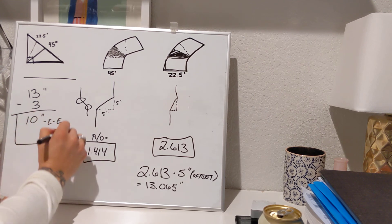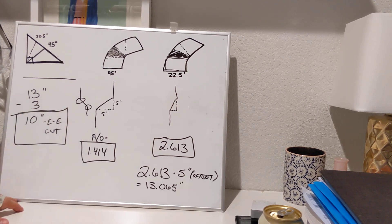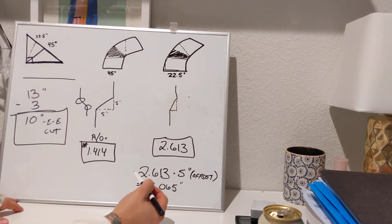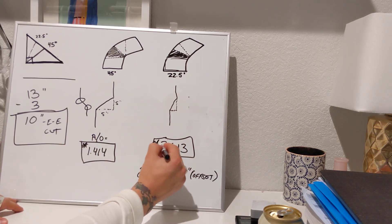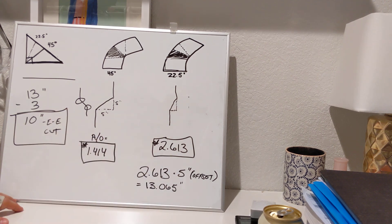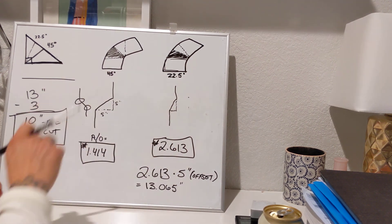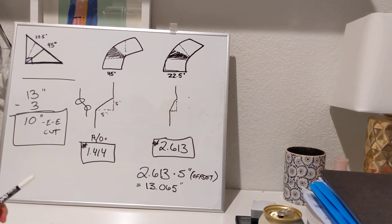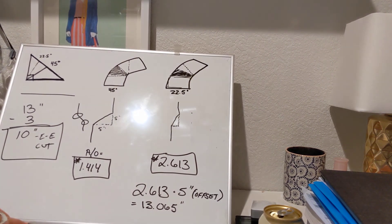The biggest thing you need to learn about 22s and 45s is these are your special numbers: 1.414 is a 45, and 2.613 is your 22.5-degree offset. Thanks for tuning in guys, hope you have fun. Get out there and plumb, and love you.